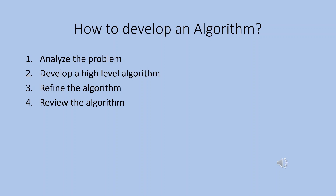Step 2: Develop a high-level algorithm. Step 3: Refine the algorithm — this is to elaborate and add detail to the high-level algorithm. We want to develop a solution in detail. We want to develop the problem further. For example, I need to eat a cake — the high-level algorithm has three steps.